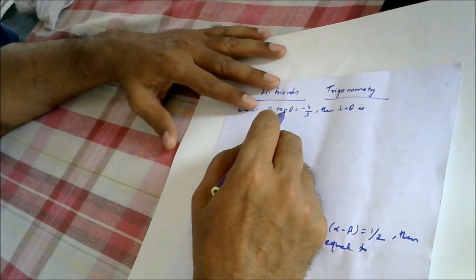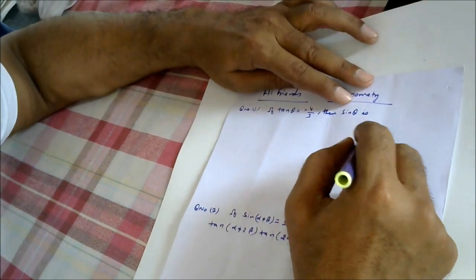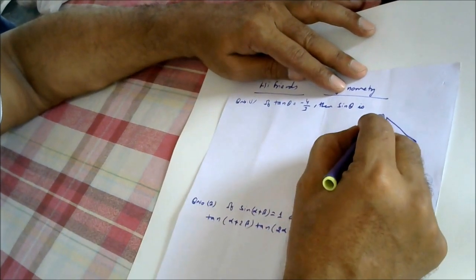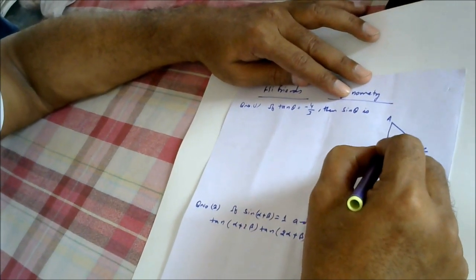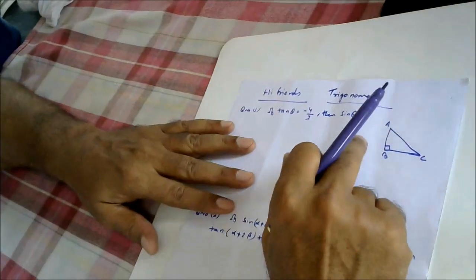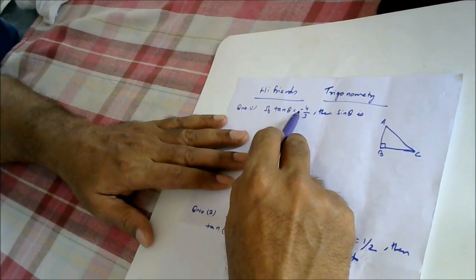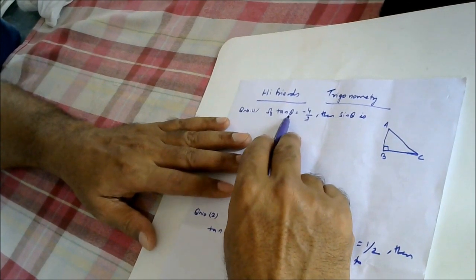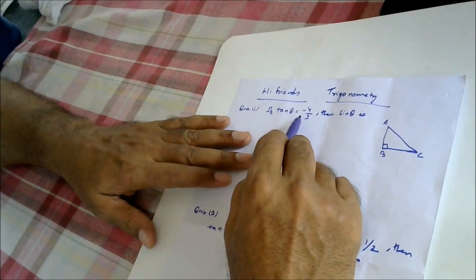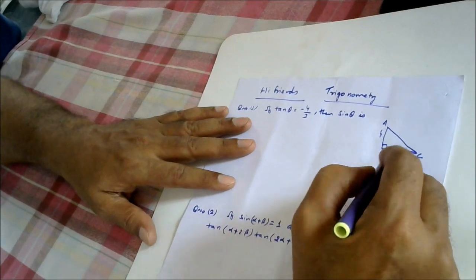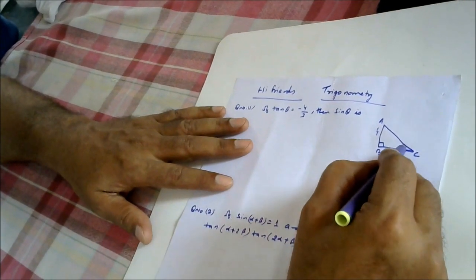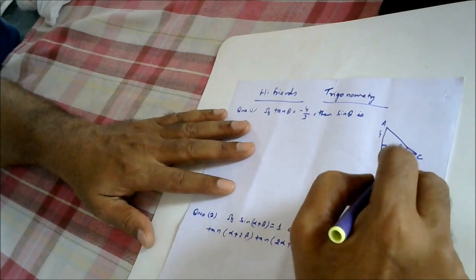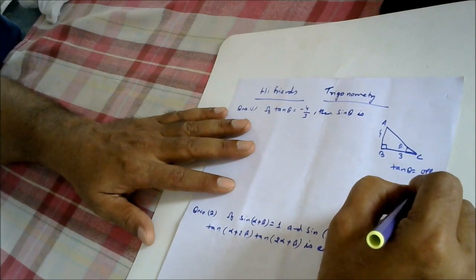We are given the value tan θ, so we may utilize a right angle triangle also. We may utilize right angle triangle A, B and C to find out this one. When we are using a right angle triangle, we will not be using the negative sign, because this negative sign indicates direction — in which quadrant it is lying. Here we will write it as 4 and 3, because tan θ equals opposite by base.